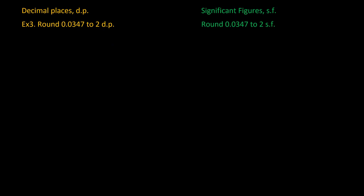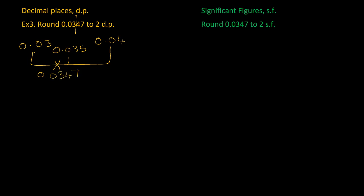Here's the next example — rounding to two decimal places again. Of course, they don't always ask for two decimal places; if it's three you go three, if it's one you go one along, and so on. So two decimal places: we put our line in. At the beginning we have 0.03, at the end we have 0.04, and halfway is 0.035. Our number is 0.034-something, so that sits just before the midpoint and will round to 0.03.